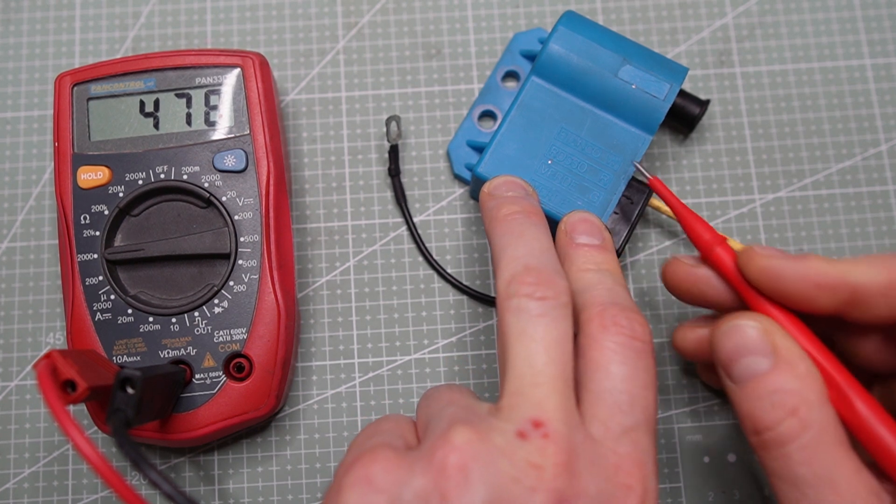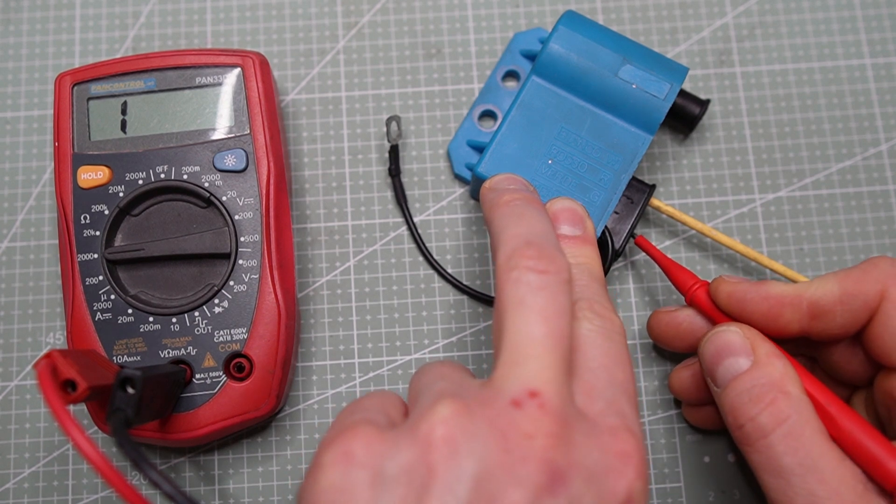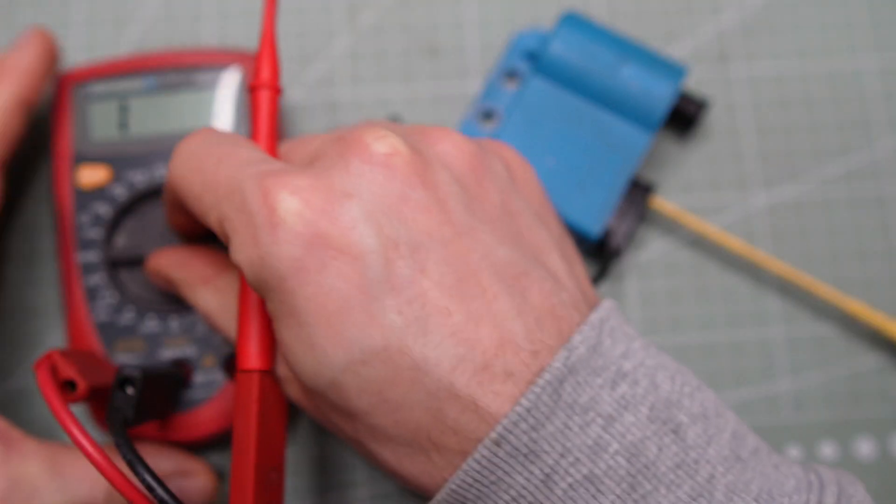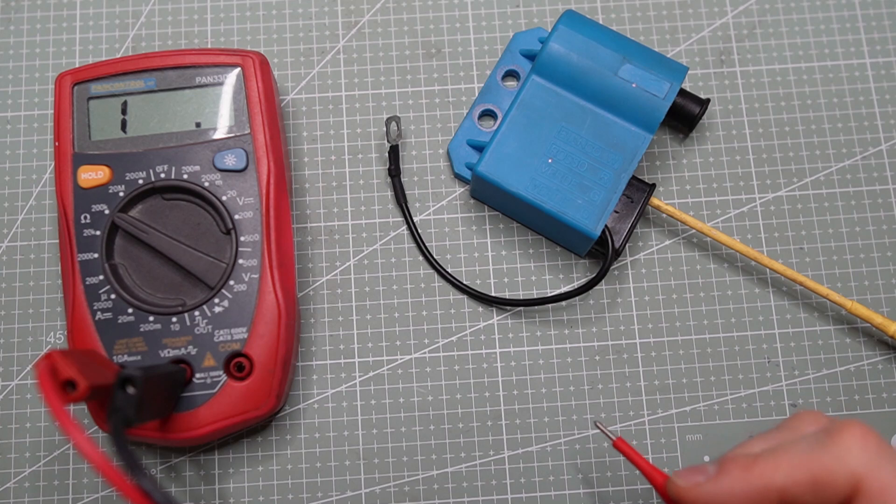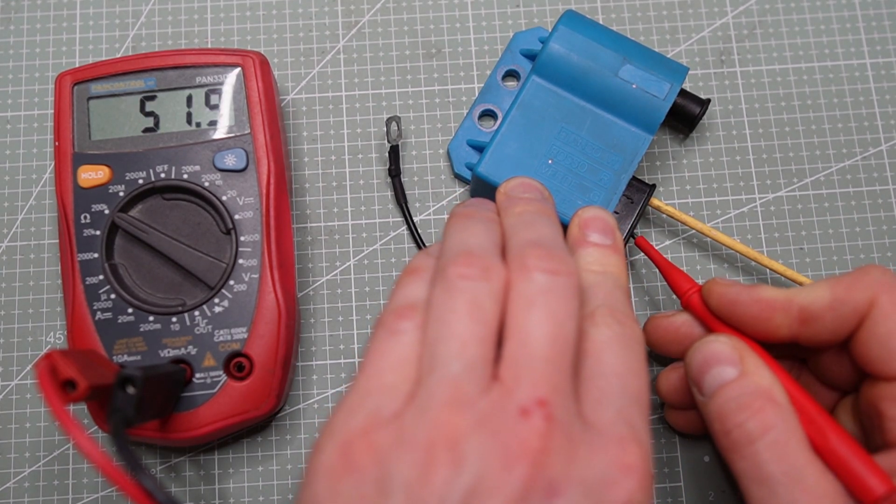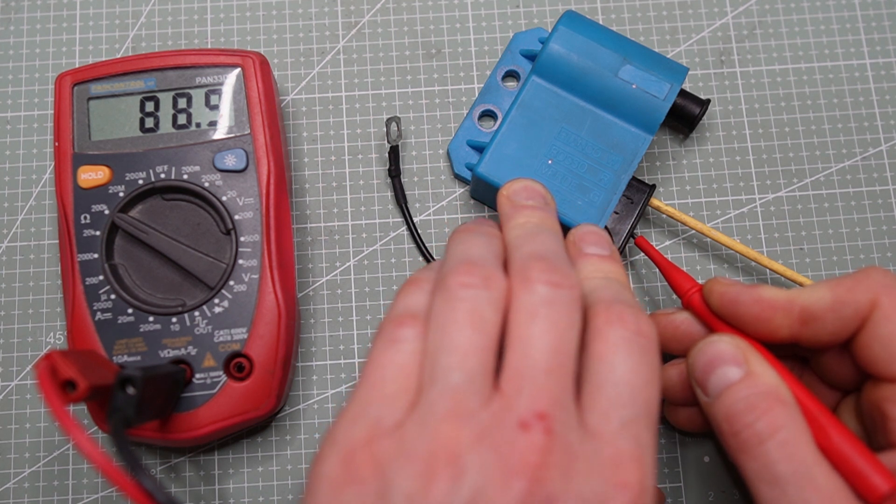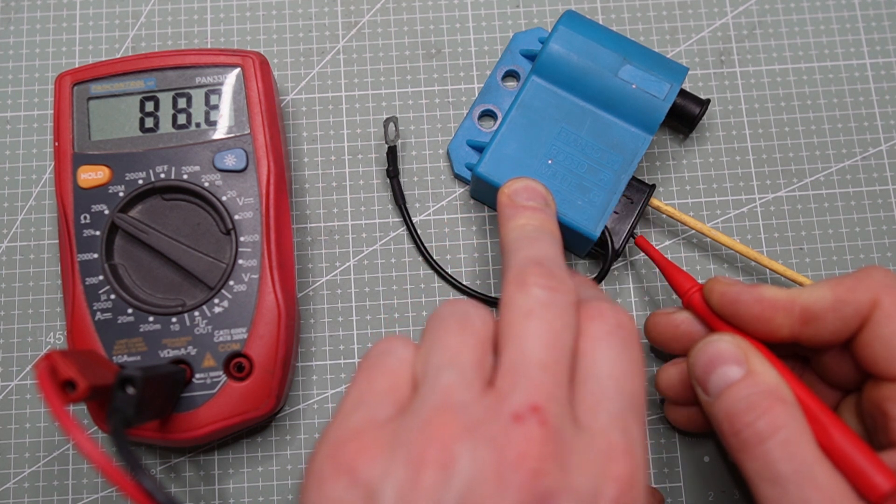Now we're going to take white and verde, the green. And there should be... oh sorry, I have to set to 200,000 kilo ohm. Should be around 88. 88.8. Very good.